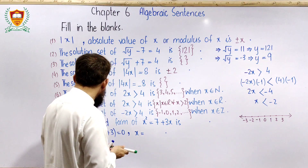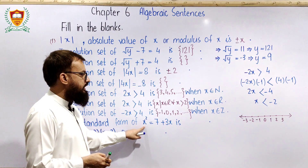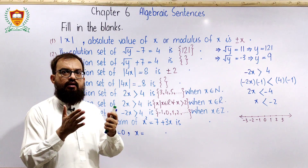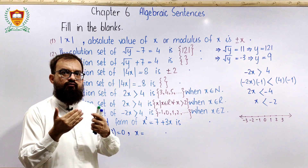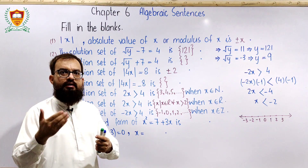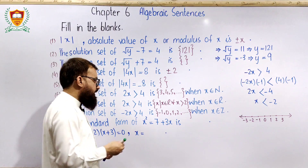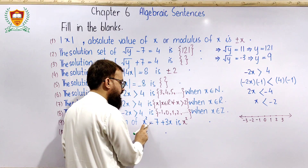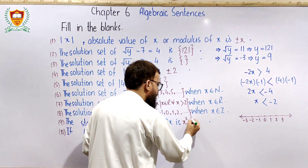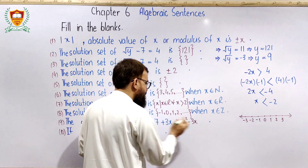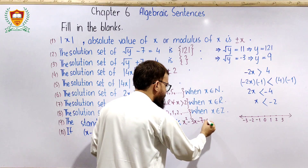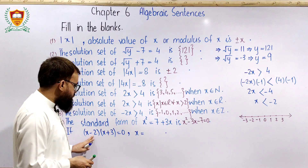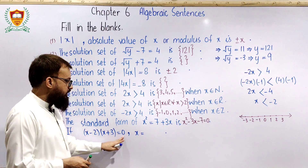اب standard form of quadratic equation دیکھتے ہیں۔ Standard form لکھنے کے لیے پہلے square والی term، پھر one power والی term، پھر constant، اور right side پر 0 لکھتے ہیں: x² + 3x − 7 = 0۔